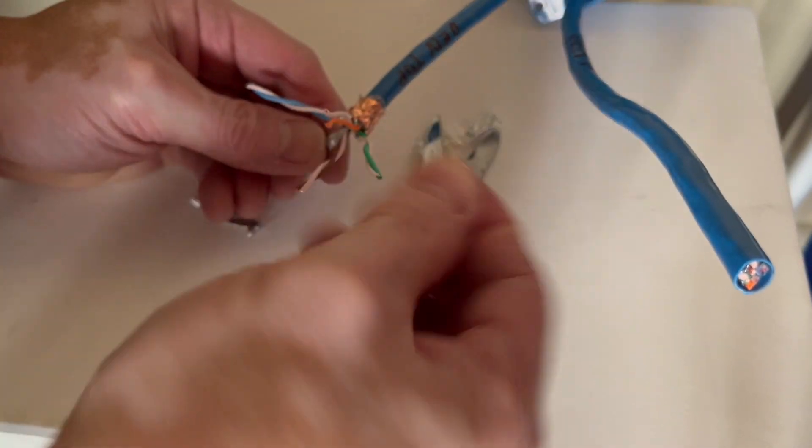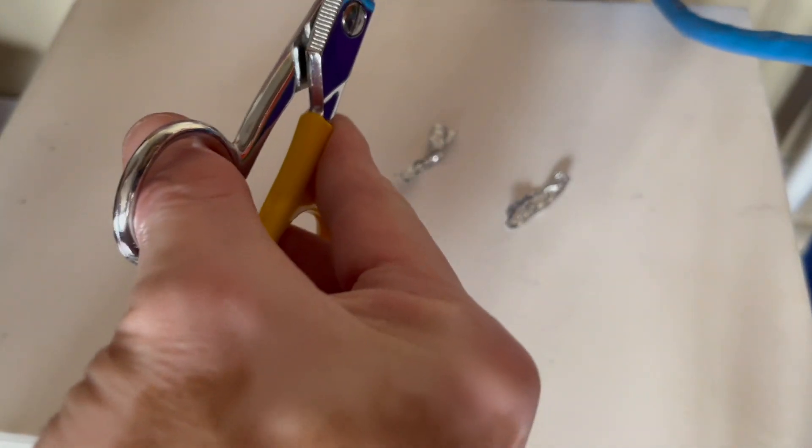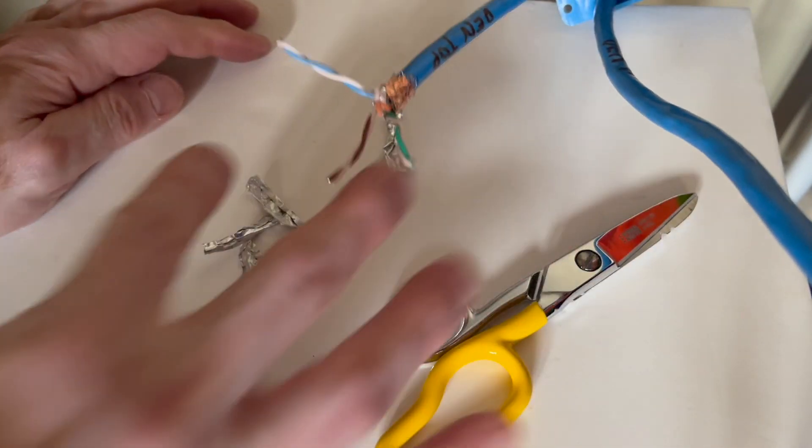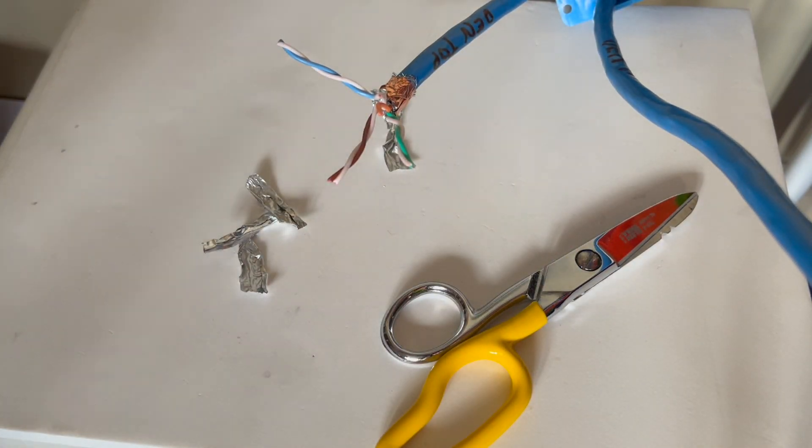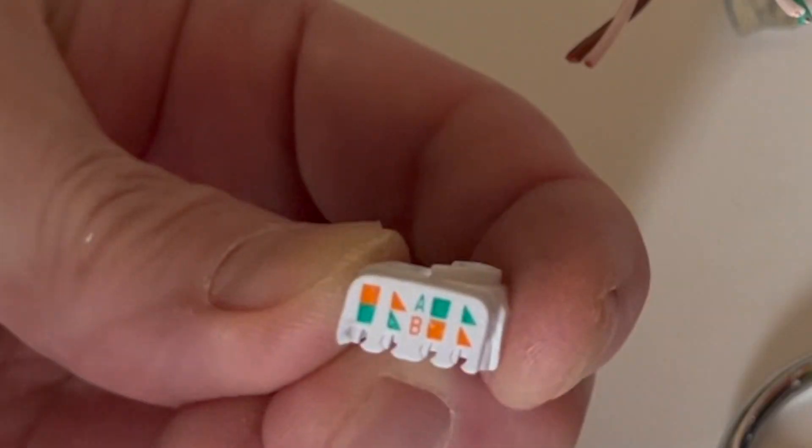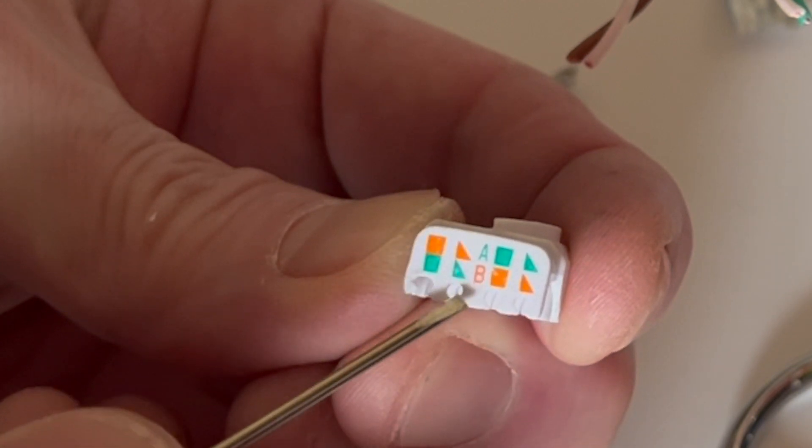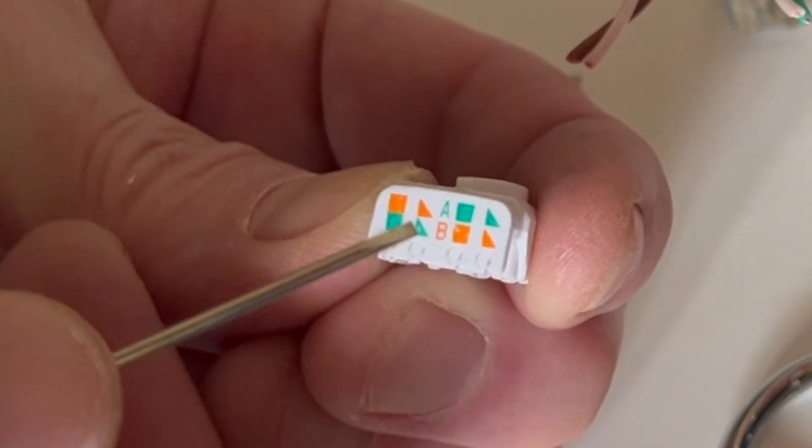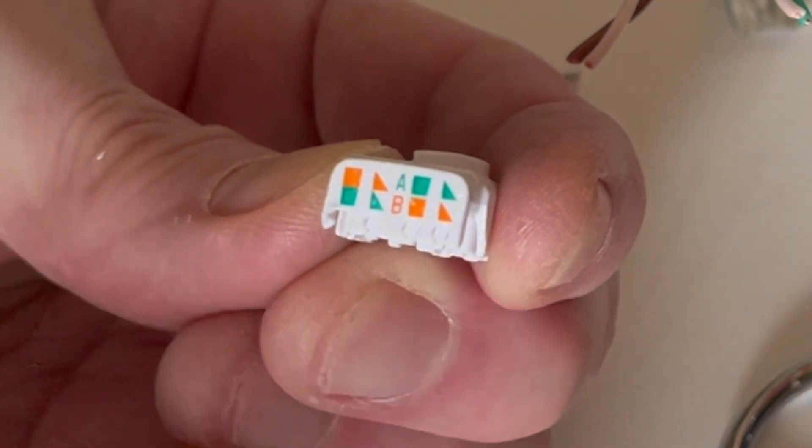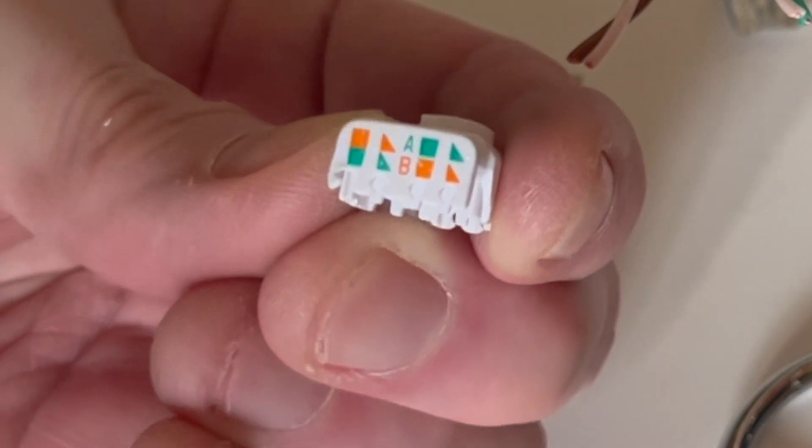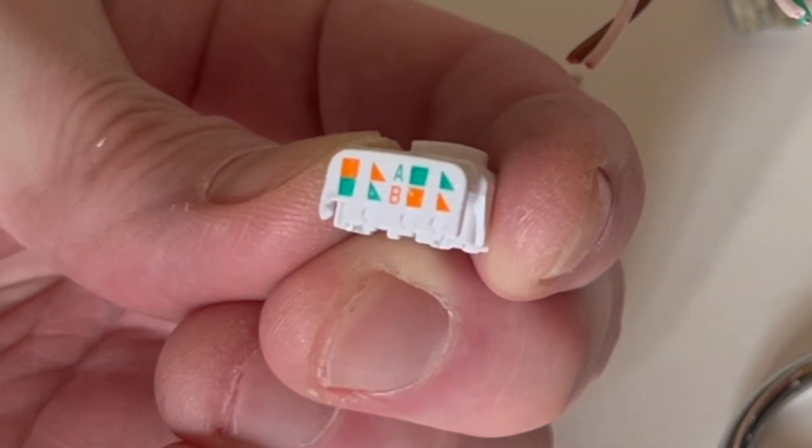Let's remove the shield. These are aluminum shielding, I guess. Now we need this. It says here B, and the difference between the B and the A: the orange and the green are reversed. My existing network is of type B wiring; we have to be consistent, so I'm following type B.